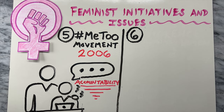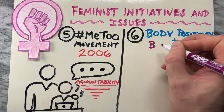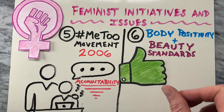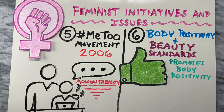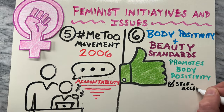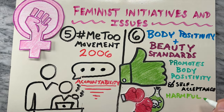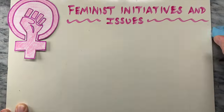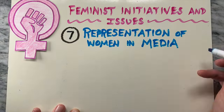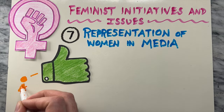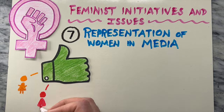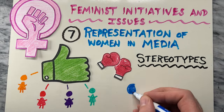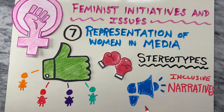Next is the focus on body positivity and beauty standards. Feminism challenges unrealistic beauty standards imposed on women and promotes body positivity, encouraging self-acceptance and challenging harmful stereotypes. Lastly is the representation of women in media. Feminists advocate for diverse and accurate representation of women and marginalized genders in media, challenging stereotypes and promoting more inclusive narratives.